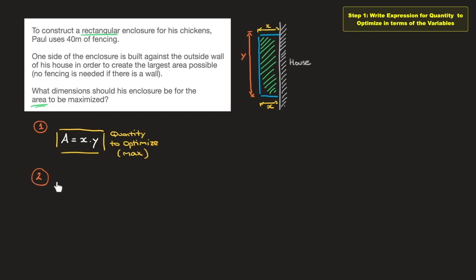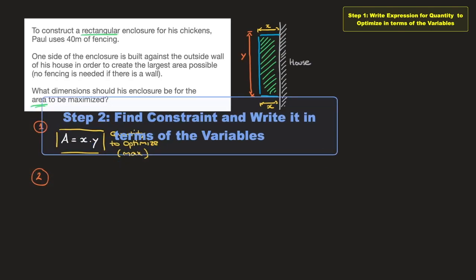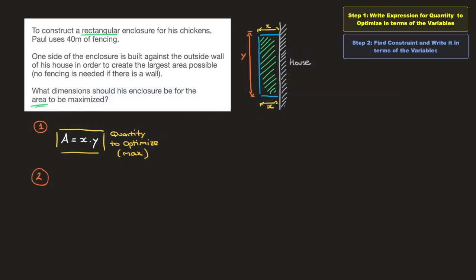Now in step two of an optimization problem, the job is to find the constraint. Not only that, we need to find an expression for the constraint written in terms of the same variables that we used in step one. So those would be x and y in this case. And when I say constraint, think of it as what's the limitation? Or in this case, what's stopping Paul from making this enclosure the size of five football fields? Or even the size of a whole country? Well, for that, as we read through the question again, we quickly find that the constraint is the fact that Paul only uses 40 meters of fencing. So that's the constraint.